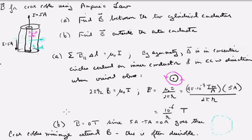If we go to the outside of both of these conductors, B will be 0, since on the path that we've chosen